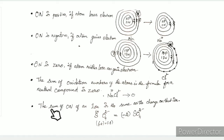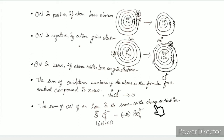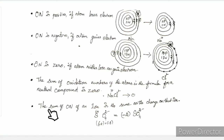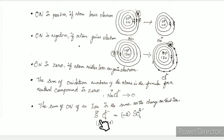The sum of oxidation numbers of an ion is the same as the charge on that ion. If you add the oxidation numbers, you get the charge on the ion. For example, consider the sulfate ion.